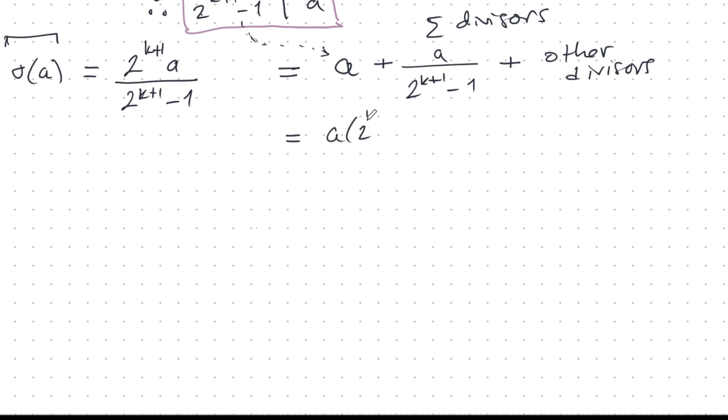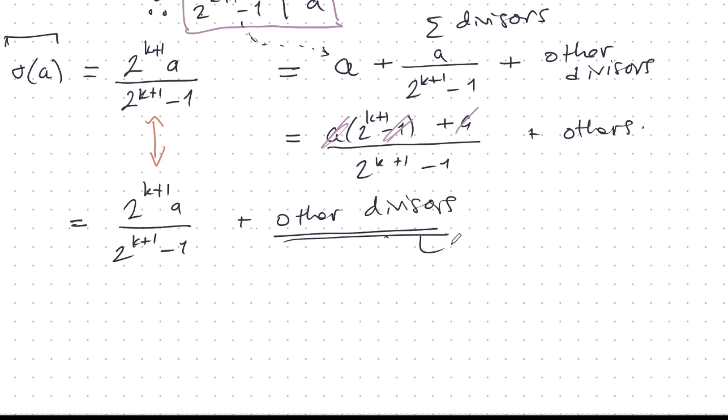Let's see if there are other divisors. I'm going to bring this to the same denominator. Plus a over 2k plus 1 minus 1 plus others. Now, what happens here is this a cancels out. One of them cancels out. And I get a 2 power... I'll write it this way. 2 power k plus 1. A over 2k plus 1 minus 1 plus other divisors. Right, so let's compare these two like this. And we see that the other divisors are actually... They don't exist. So they're equal to 0. Well, the divisors are not 0. The sum of all these divisors are 0 because they don't exist. So in fact, a has only 2 divisors.